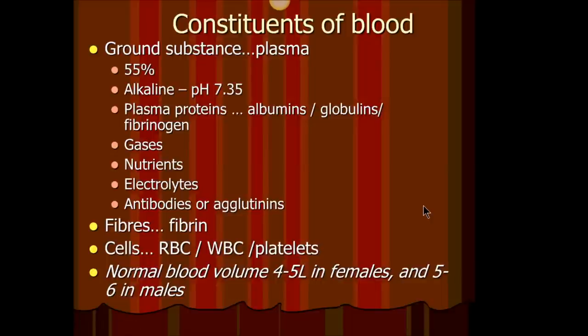Today we're going to start blood, the first part of the cardiovascular system. Blood is actually connective tissue. If you remember in ANP1 we covered connective tissue, and the reason we call blood connective tissue is that connective tissue has cells, it has fibers, and it has ground substance.